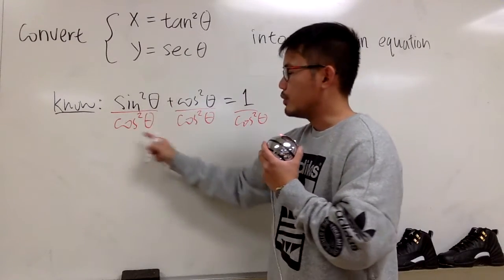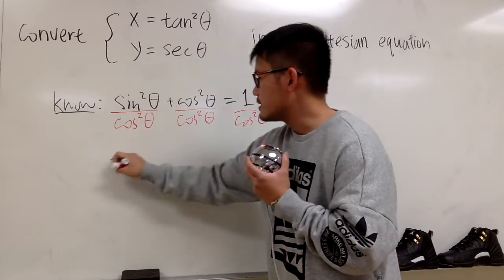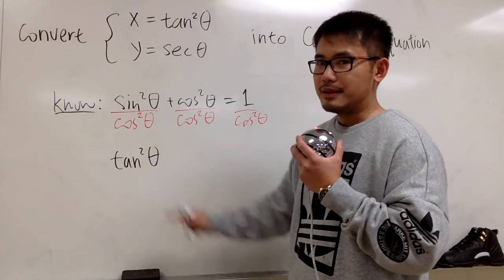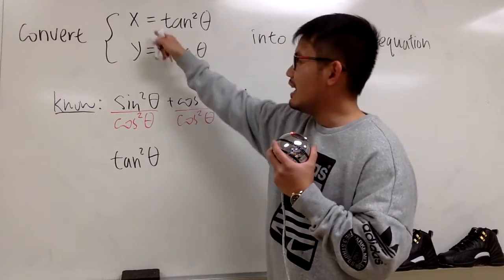So you see that when we do this, this is going to give us tangent squared theta, and you see this is going to give us what? The x, isn't it?